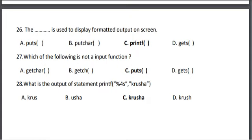Twenty-eighth, what is the output of the statement: printf("%4s", "crucia")? The correct answer is option C, crucia. Thank you.